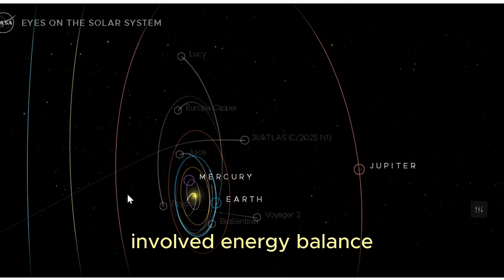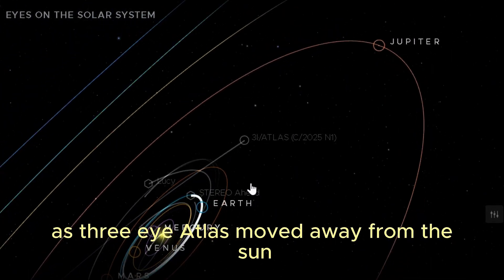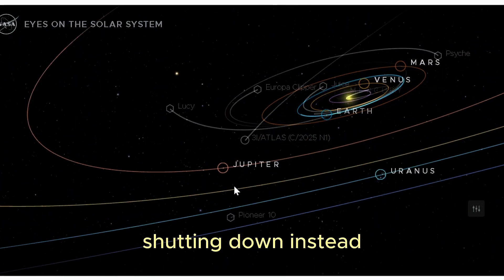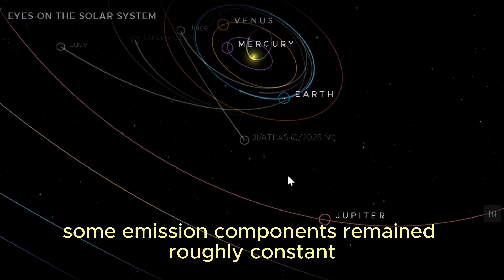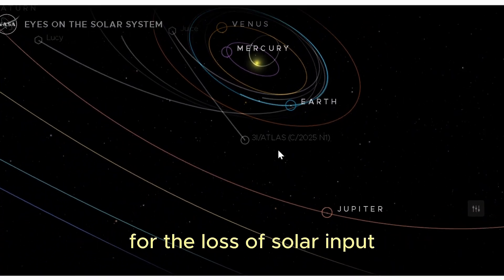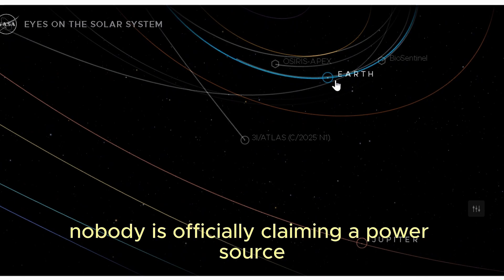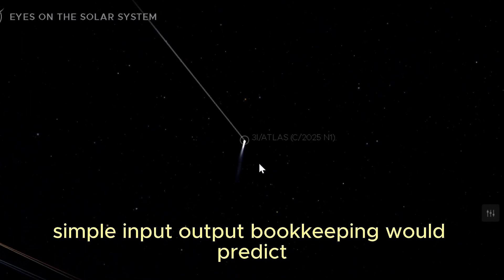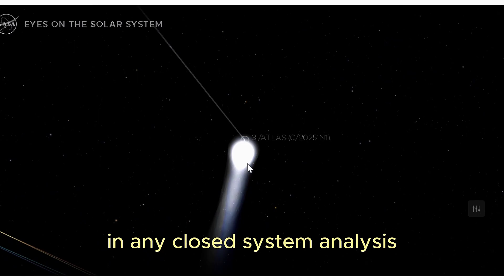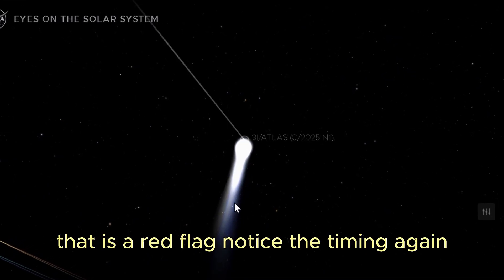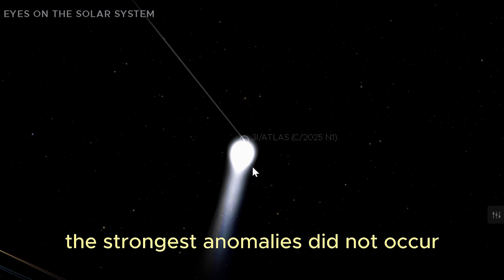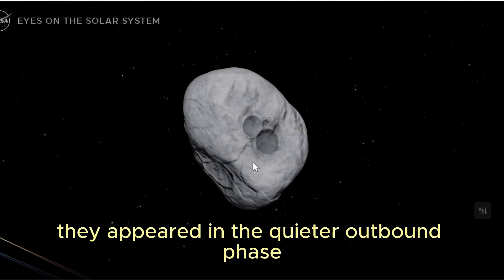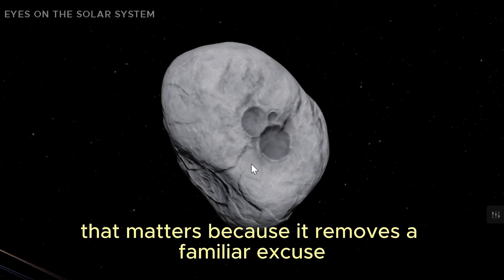One of the most striking outbound findings involved energy balance. As 3I Atlas moved away from the sun, its activity should have dropped in measurable ways: cooling, fading, shutting down. Instead, some emission components remained roughly constant, as if something were compensating for the loss of solar input. To be clear, nobody is officially claiming a power source. What they can say is that certain outputs did not fall off in the way simple input-output bookkeeping would predict. In any closed system analysis, that is a red flag. Notice the timing again. The strongest anomalies did not occur at closest approach, they did not occur under maximum public scrutiny. They appeared in the quieter outbound phase. That matters, because it removes a familiar excuse.